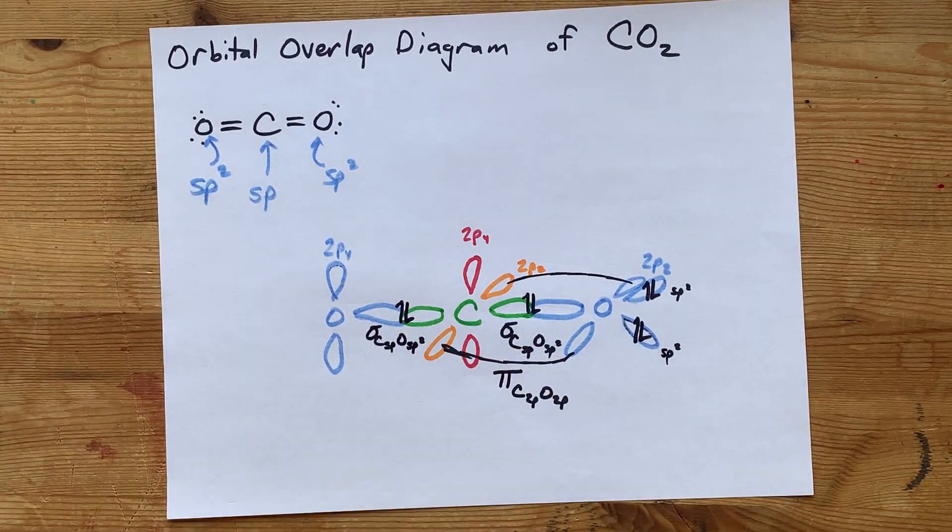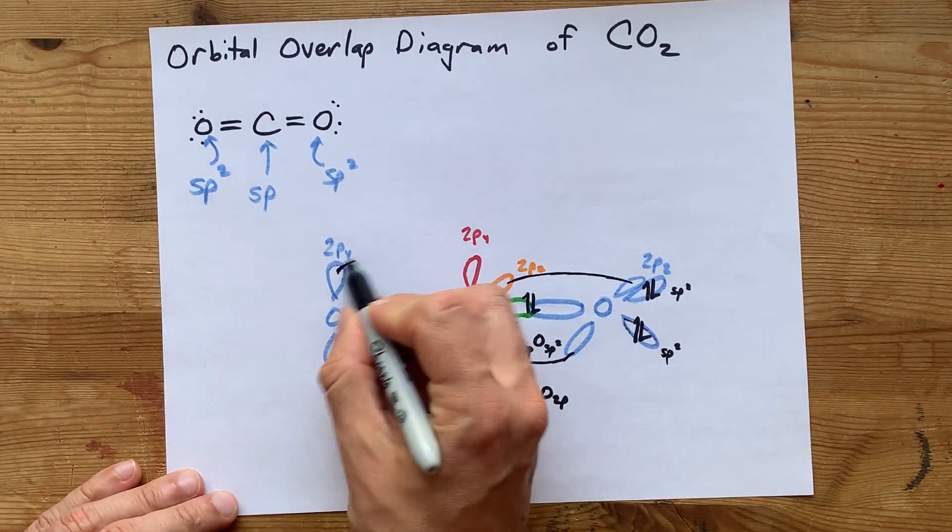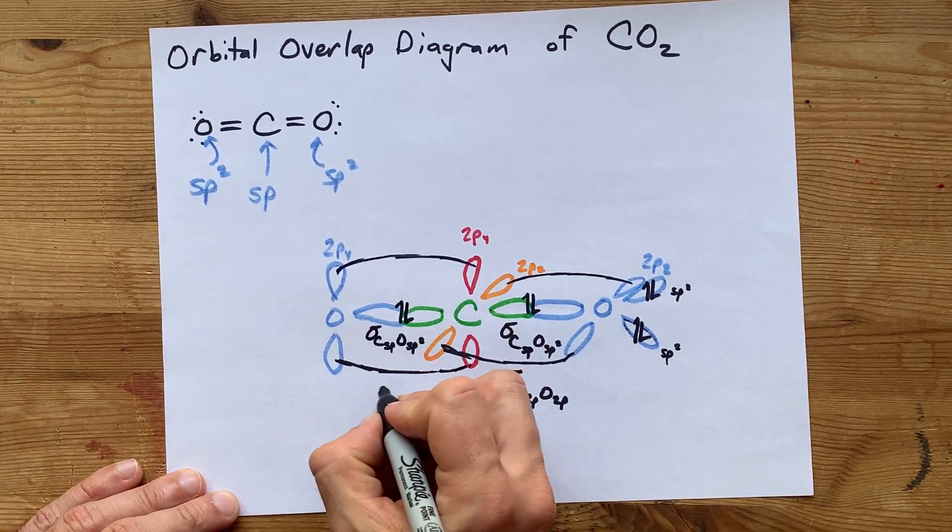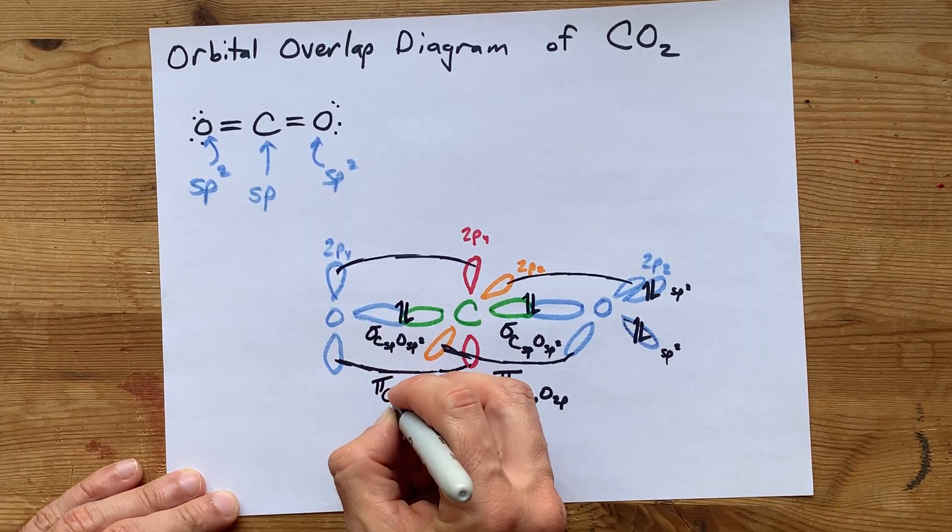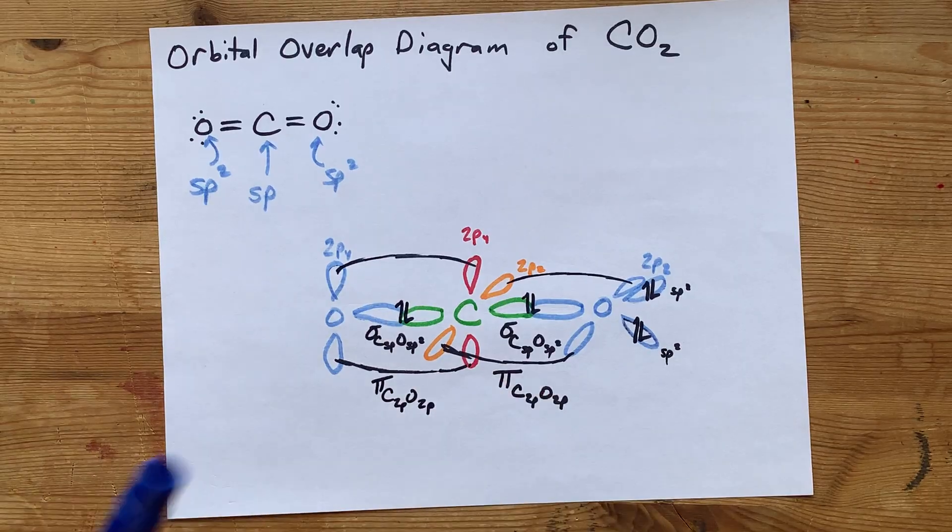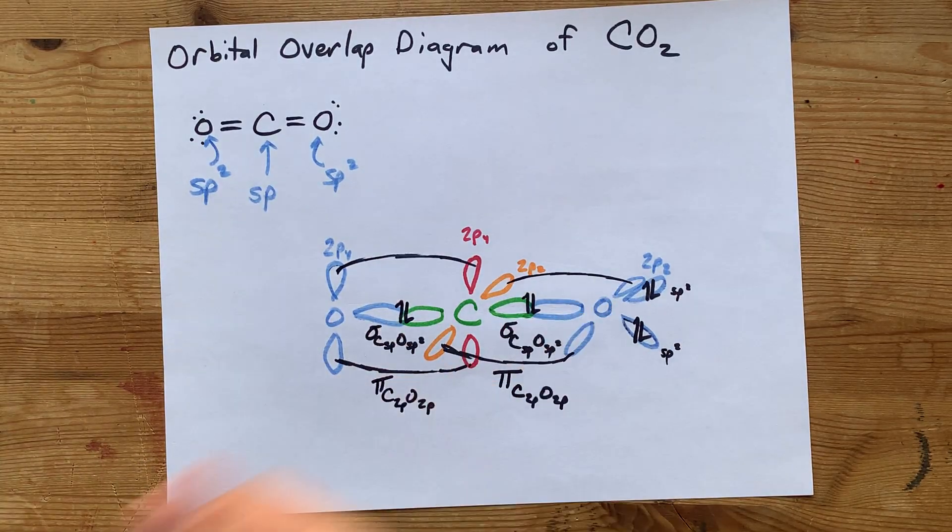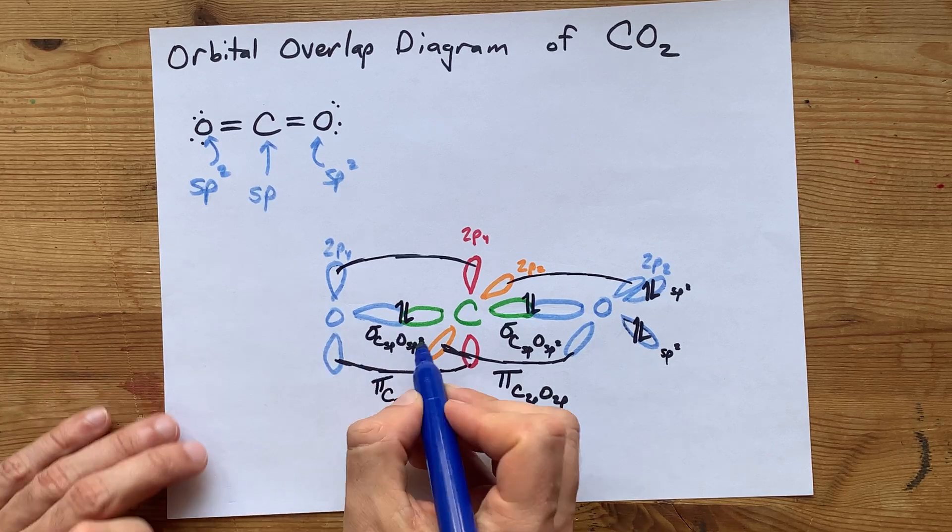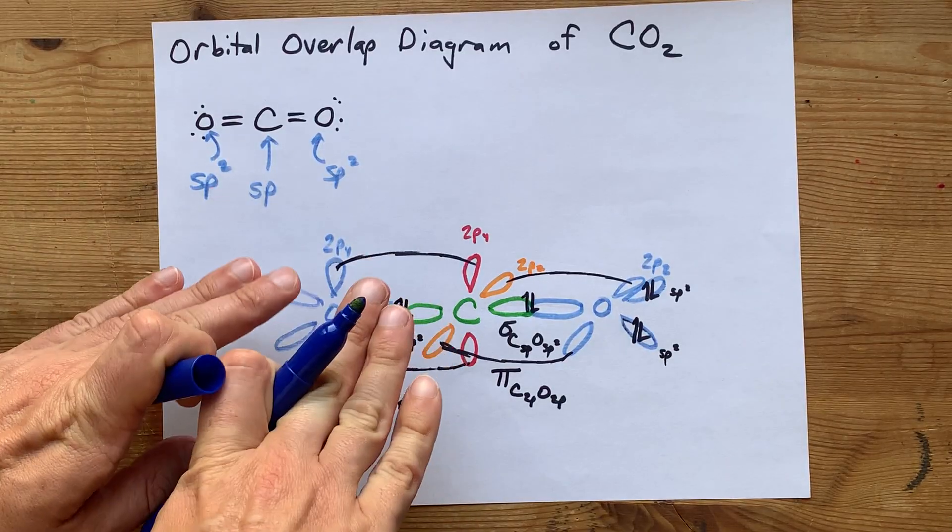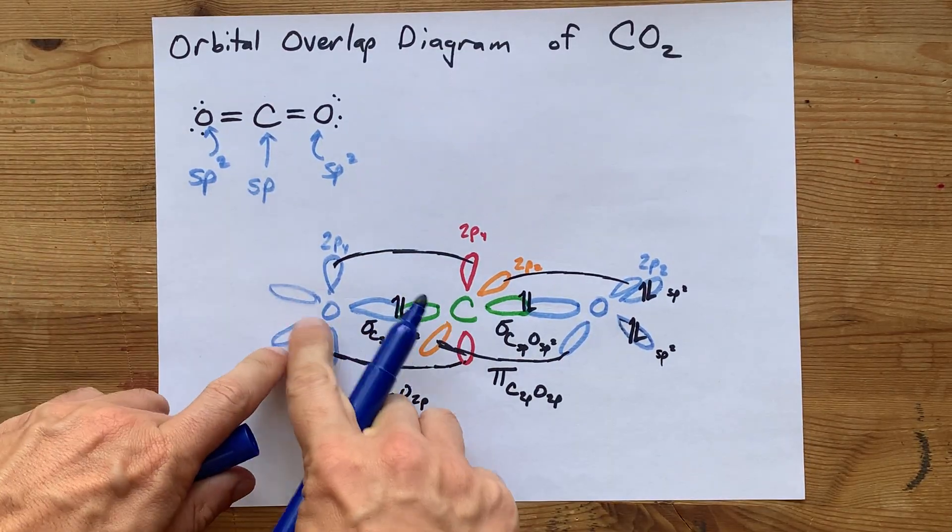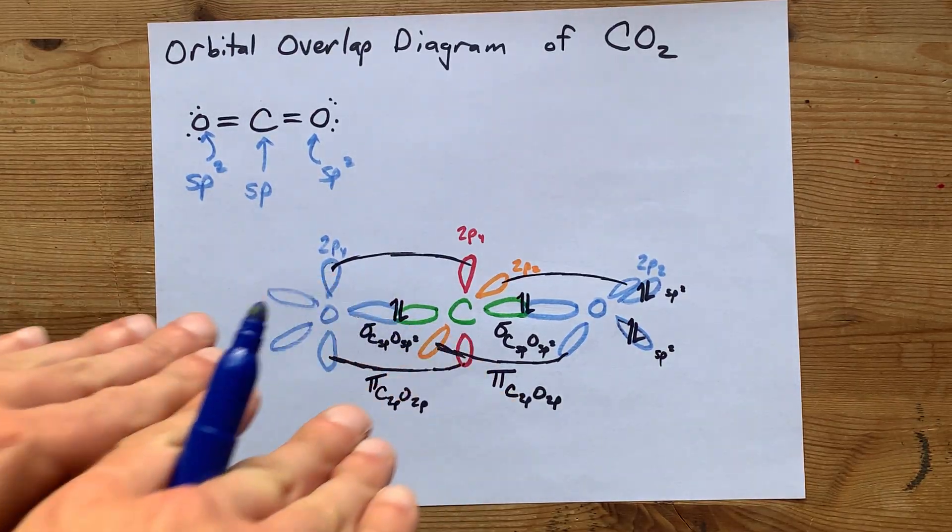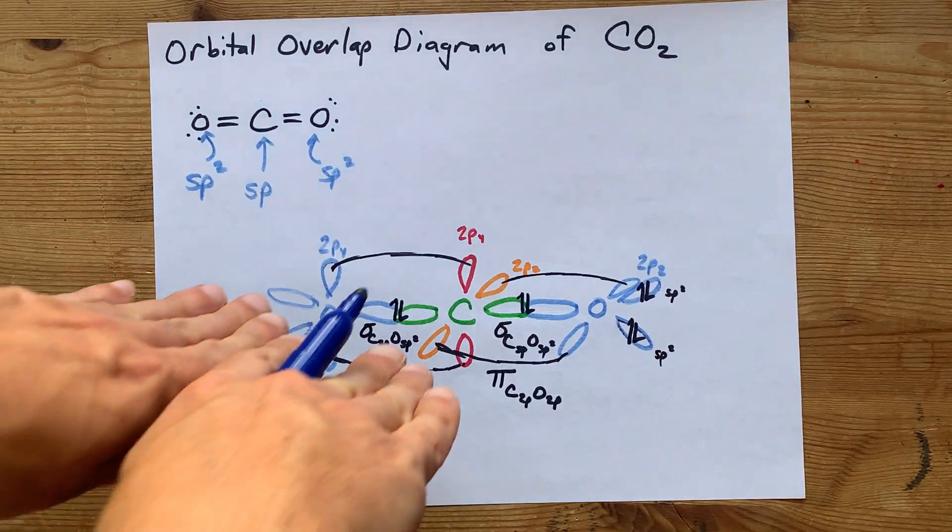One of its sp2 hybridized orbitals. And then, this side-by-side overlap will be the pi bond between carbon's 2py orbital and oxygen's leftover 2py orbital. This oxygen also has two other sp2 hybridized orbitals. One, two. We're trying to, again, show some three-dimensionality. These are 120 degrees from each other, except they're oriented on this plane here that you're looking at into the page.